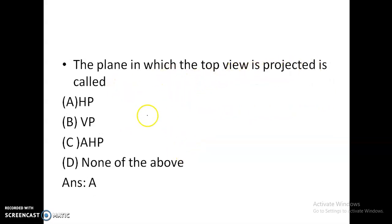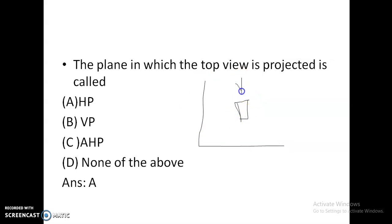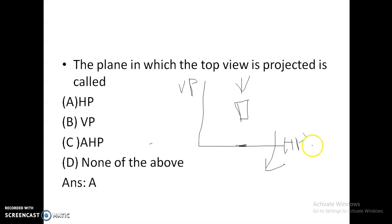The plane on which the top view is projected is called the horizontal plane (HP). For an object, we project onto the HP and VP (vertical plane). We rotate the horizontal plane downward to get the top view below the XY line, and the front view appears on the VP above the XY line.